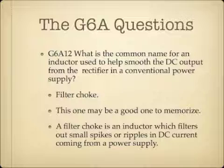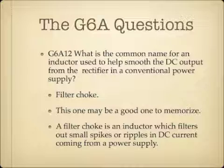What is the common name for an inductor used to help smooth DC output from the rectifier in a conventional power supply? This is a filter choke, and this may be one you need to memorize. A filter choke is an inductor which filters out small spikes or ripples in DC current coming from a power supply. So a filter choke is the common name for an inductor used to help smooth the DC output from the rectifier in a conventional power supply.